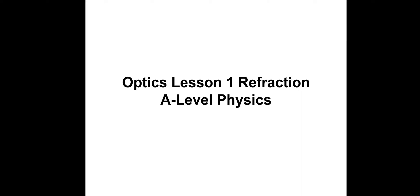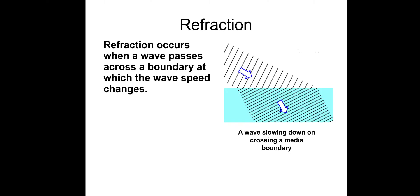This is optics lesson 1 and this is refraction. Refraction occurs when a wave passes across a boundary. When a wave passes across a boundary, typically the wave speed would change, and it's typically due to the difference in densities between the materials.